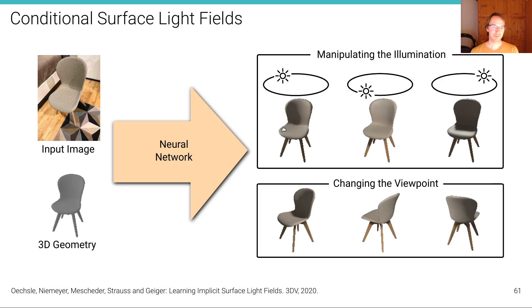We can also use these techniques to model surface light fields, which is basically the appearance of each point on the surface of the object conditioned on the viewpoint and the light location. Then, given an input image and a 3D geometry such as a car model, we can, using our trained neural network, infer a model where we can afterwards manipulate the lighting and manipulate the viewpoint.